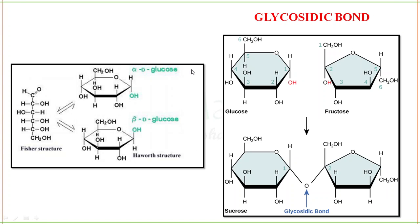Now we will define alpha and beta D-glucose. The Fischer projection is the linear structure, and cyclization leads to the Haworth structure. If the OH group at C1 is below, it is called alpha D-glucose. If this OH group is in the same plane as CH2OH — on the same side — we call it beta D-glucose.